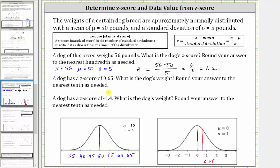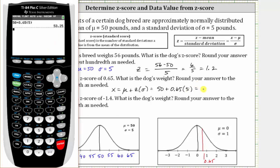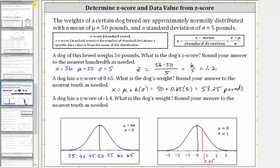To find the dog's weight, we start with the mean and then add 0.65 times the standard deviation. So the dog's weight x equals the mean (mu) plus the z-score times the standard deviation, which is 50 pounds plus 0.65 times five, which equals 53.25 pounds. On the normal distribution, this value is approximately here.